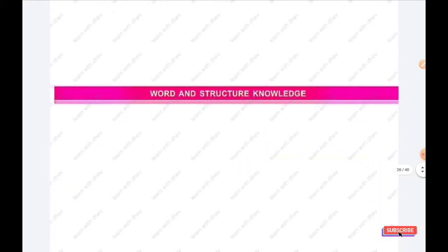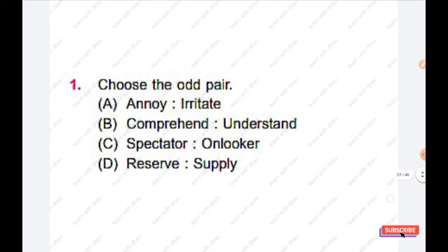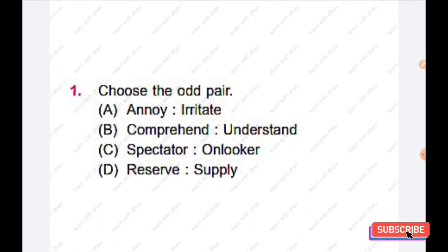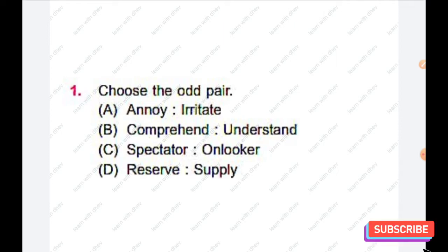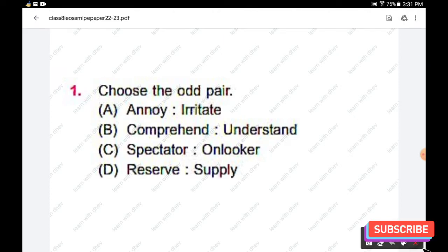The first section is Word and Structure Knowledge. Question number one: choose the odd pair. Options are: Annoy is to irritate; Comprehend is to understand; Spectator is to onlooker; Reserve is to supply. The right answer is option D — Reserve is to supply.